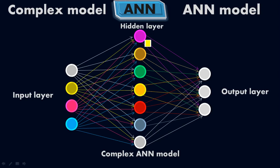Connect the first hidden cell with all three outputs, then the second one with all three outputs, the green one with all three outputs, the yellow one, the red one, the blue one, and the white one — following exactly the same procedure we saw in the previous model: connect each cell with all the cells in the next layer. So again, it is a complex model.